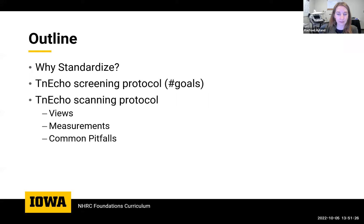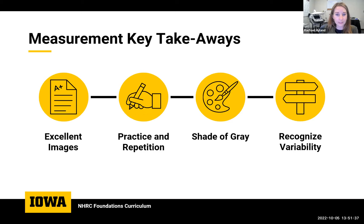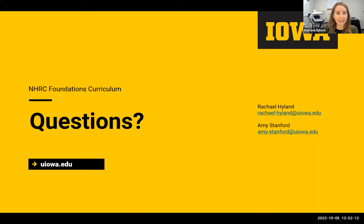We've made it through all the measurements, covering the benefits of standardization, the Iowa protocol, lots of measurements, and tips along the way. Key takeaways: excellent images are the foundation of these measurements. Practice and repetition are the key to getting good at these — don't despair at the beginning. Follow the shades of gray; your eye will improve over time. Overall, more is usually more — averaging is your friend, repeat images if you don't get good values. It just takes practice. Thank you all for attending.